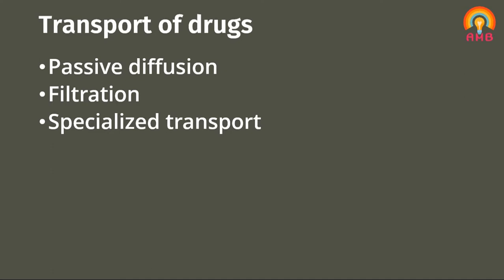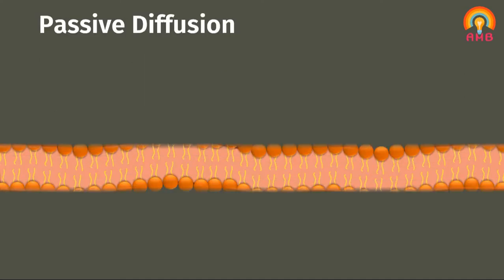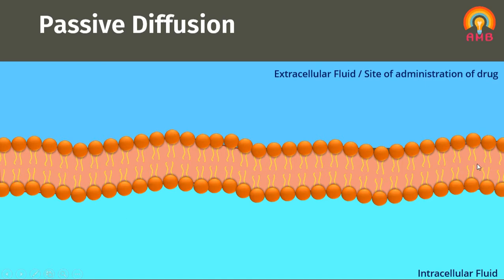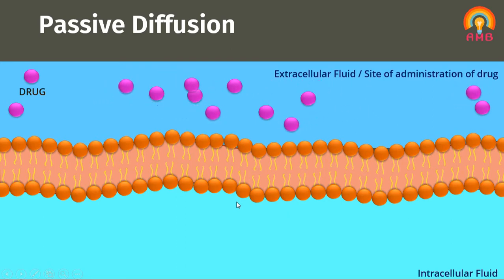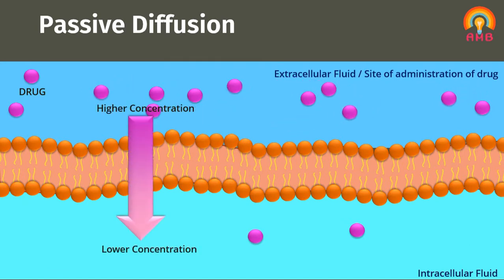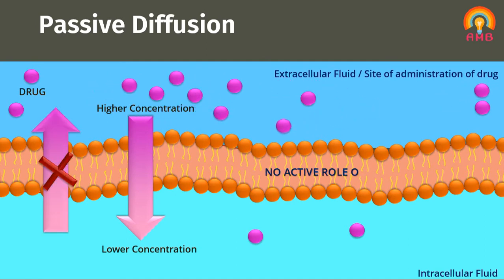First, we are discussing about passive diffusion. Here we can see a cell membrane which divides the fluid of the body into extracellular fluid and intracellular fluid. The drug is present in extracellular fluid or at the site of administration. The drug diffuses across the membrane in the direction of its concentration gradient — that is, from higher concentration to lower concentration. The cell membrane is not playing any active role in this process.